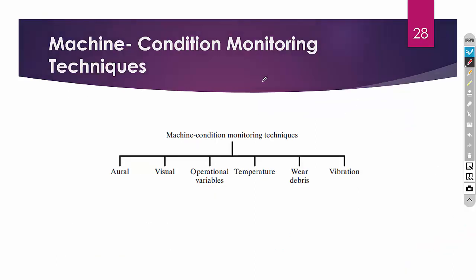There are different types of condition monitoring techniques. The first one is aural — it is audio-based condition monitoring where we monitor the sound of the machinery. Generally, when a machine produces unwanted noises it means the machine has some defect. For example, in our bikes we observe the sound from the engine; when it produces unwanted noises it means there is some fault at the engine.